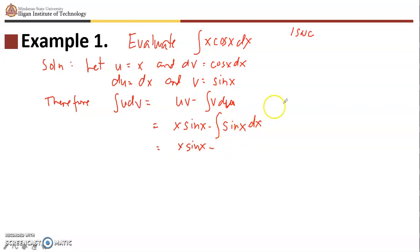We should get x sin(x). The integral of sine is negative cosine, so we have negative cosine x plus C. That should now be x sin(x) + cos(x) + C. So that's actually the integral of x cos(x) dx.